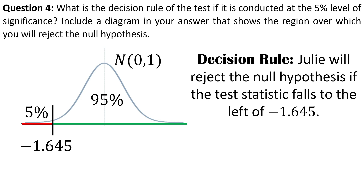If the null hypothesis is true, the probability that we will reject it anyway is 5%. In other words, 5% is the probability that we will falsely reject the null hypothesis. The level of significance defines the risk we're willing to take to falsely reject the null hypothesis. In this case, that risk is 5%.